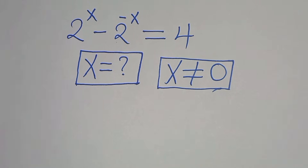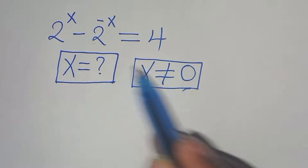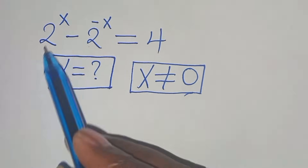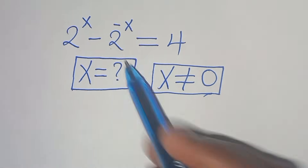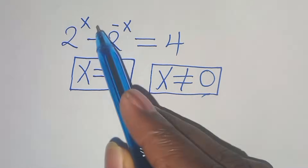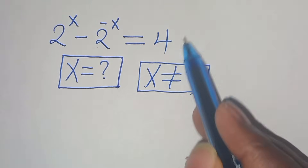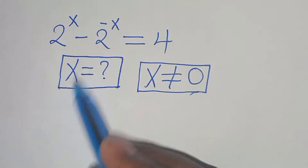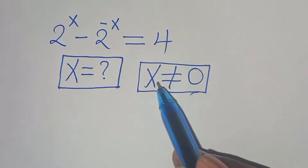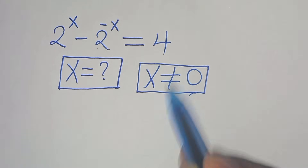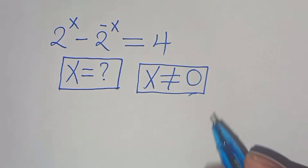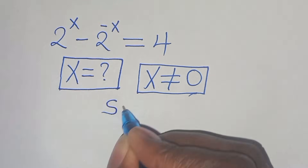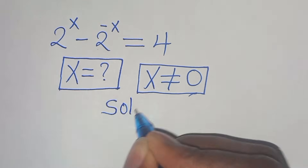Welcome, let's solve this algebra problem: 2 to the power of x minus 2 to the power of minus x equals 4. We need to find the value of x, given that x is not equal to 0. Let's work through the solution.